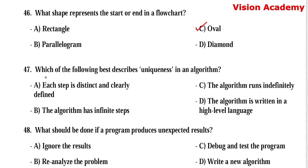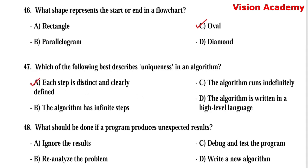Question number 47: Which of the following best describes uniqueness in an algorithm? Option A, each step is distinct and clearly defined. Option B, the algorithm has infinite steps. Option C, the algorithm runs indefinitely. Option D, the algorithm is written in a high-level language. Here, option A, each step is distinct and clearly defined, is the right answer.